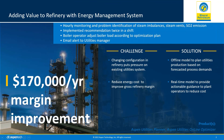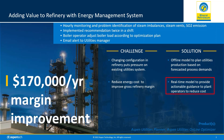For example, Burak Petroleum Corporation Limited used Aspen Utilities Planner to save $170,000 per year. The company was able to plan utilities production based on forecasted demands and used a real-time model to provide actionable guidance to plant operators to reduce costs.